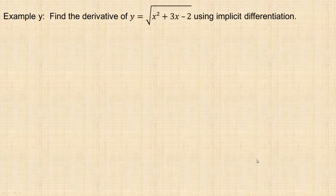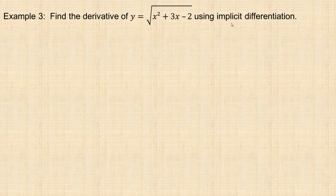One more example — Example 3. Find the derivative of this using implicit differentiation. I'm also going to do this using the chain rule to show they give the same derivative, because sometimes you do have options. In order to do implicit differentiation here, I'm going to square both sides because it's a square root. If it were a cube root, I'd cube both sides.